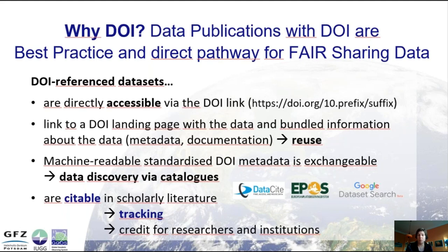Once a data set has a DOI, it is directly and permanently accessible via the DOI link. You can always find it because the link leads to a URL, and if the URL changes, the link will still lead you to the data, provided the repository or data center redirects the DOI accordingly. Most DOIs link to a landing page which includes the data and bundled metadata, documentation, technical notes, and anything you need to know — which is essential for data reuse.